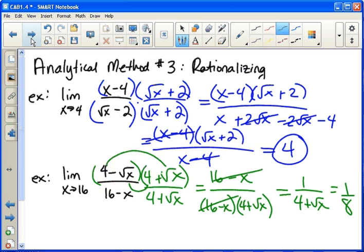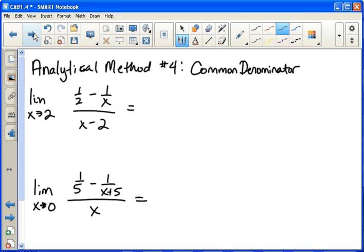The final type is the common denominator method. The thing that tells you to use this particular method is when you have fractions inside of fractions. And you do exactly what it sounds like. You find a common denominator. So you look at one half and one over x. Their common denominator would be two x.